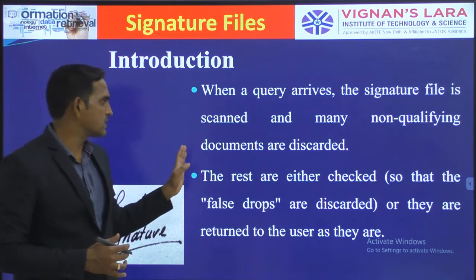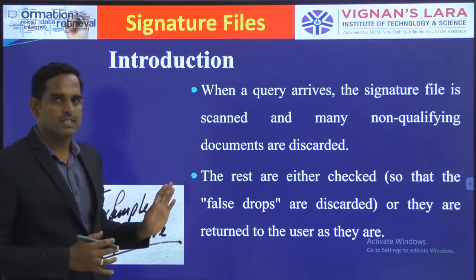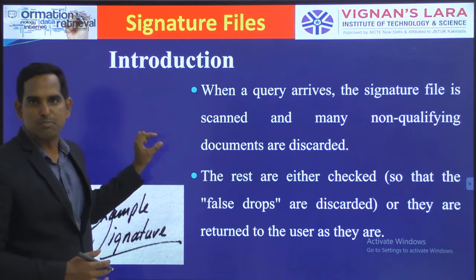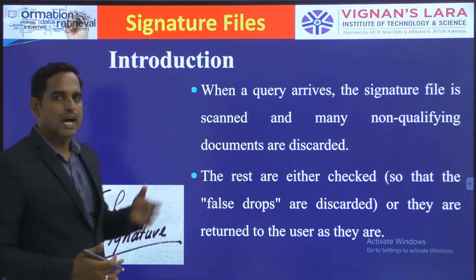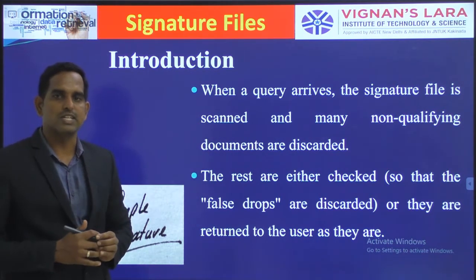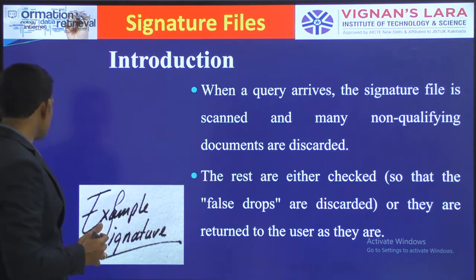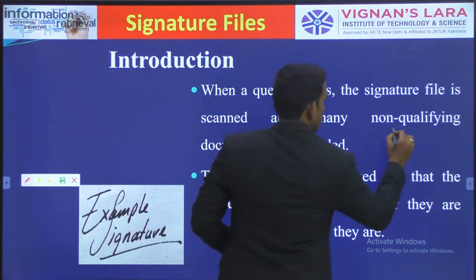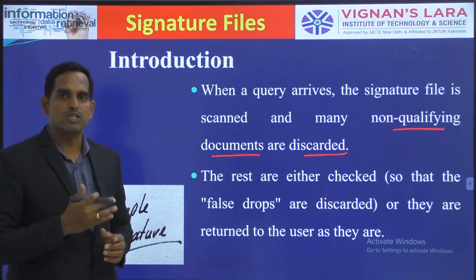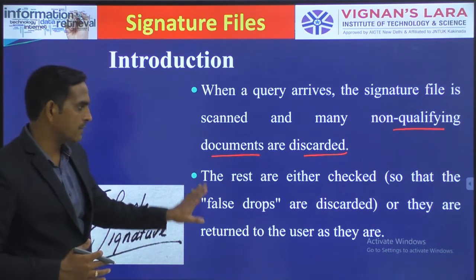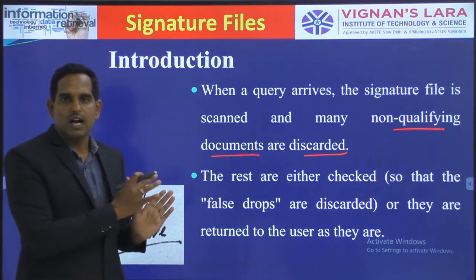When a query arrives, the signature file is scanned and many non-qualifying documents are discarded. We take the signature of that particular query and match it with the signatures present in the signature file. We discard all non-qualifying documents — as many as possible — and then check the remaining ones for false drops.